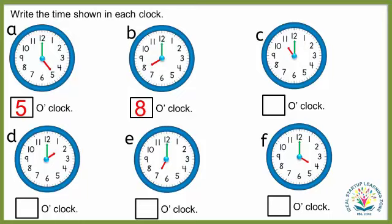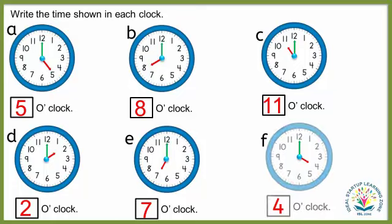Clock B — it is 8 o'clock. Clock C — it is 11 o'clock. Clock D — it is 2 o'clock. Clock E — yes, it is 7 o'clock. Clock F — it is 4 o'clock. Good job!